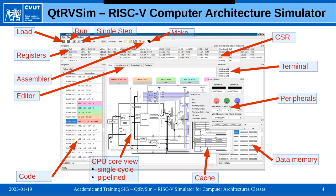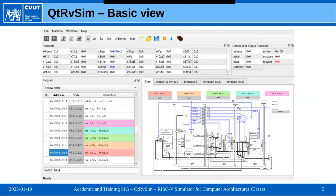Let's get started. The simulator comprises flexible windows representing important parts of the simulated computer system. Each window can be resized, rearranged, or closed as needed — it can be tabbed or a floating window. Here we have a detail of the program memory with the address of the instruction code in hexadecimal, disassembly with color highlighting corresponding to the pipeline stage, and a gray area representing instructions currently in the program cache.